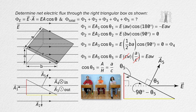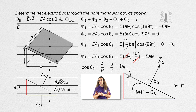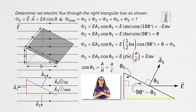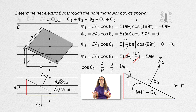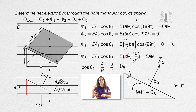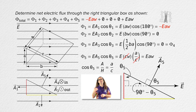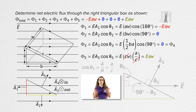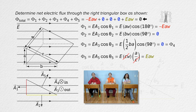That means the net flux through the closed right triangular box equals the sum of all five of those fluxes, which equals, when you add all of them together, zero.